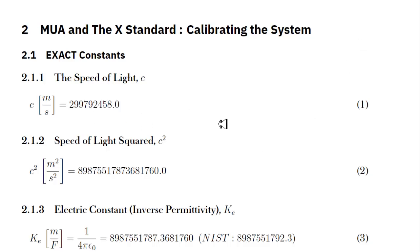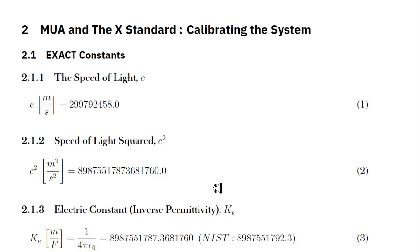The next important constant in the X standard is the speed of light squared, C². This is an equally important constant because it appears in many equations, including and especially E = MC². I think we should be writing out the digits of this constant in full, so we're sure we're not missing any digits of precision. When you square the speed of light and write it out, this is an exact quantity — we're not missing any digits of precision. The speed of light has been calibrated to be exact, and so C² is also an exact quantity.